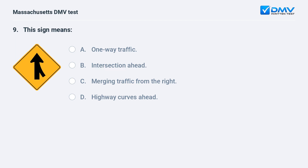This sign means: a. one-way traffic. b. intersection ahead. c. merging traffic from the right. d. highway curves ahead.